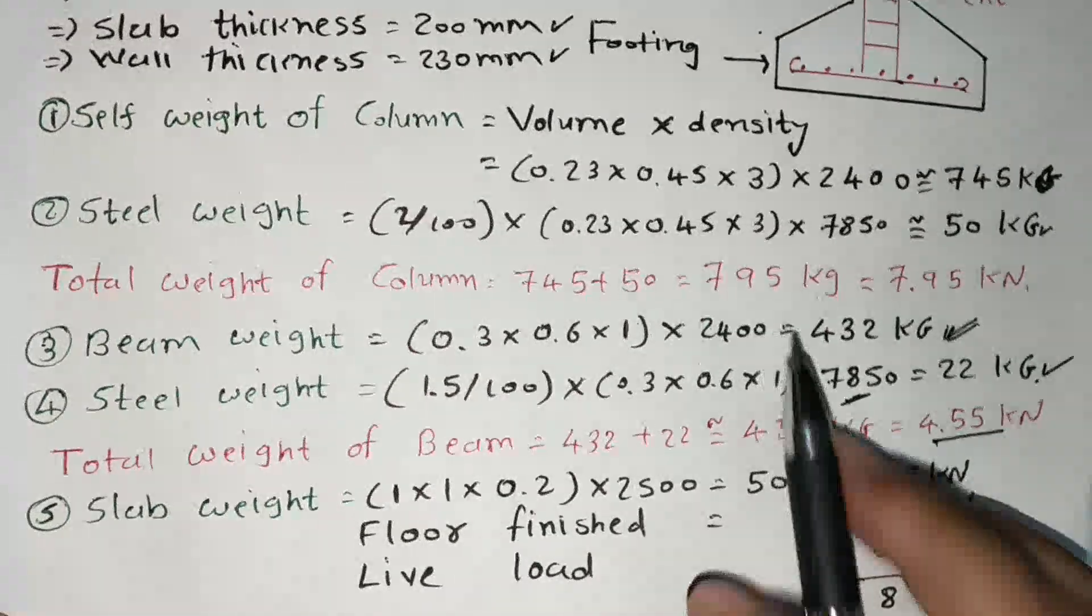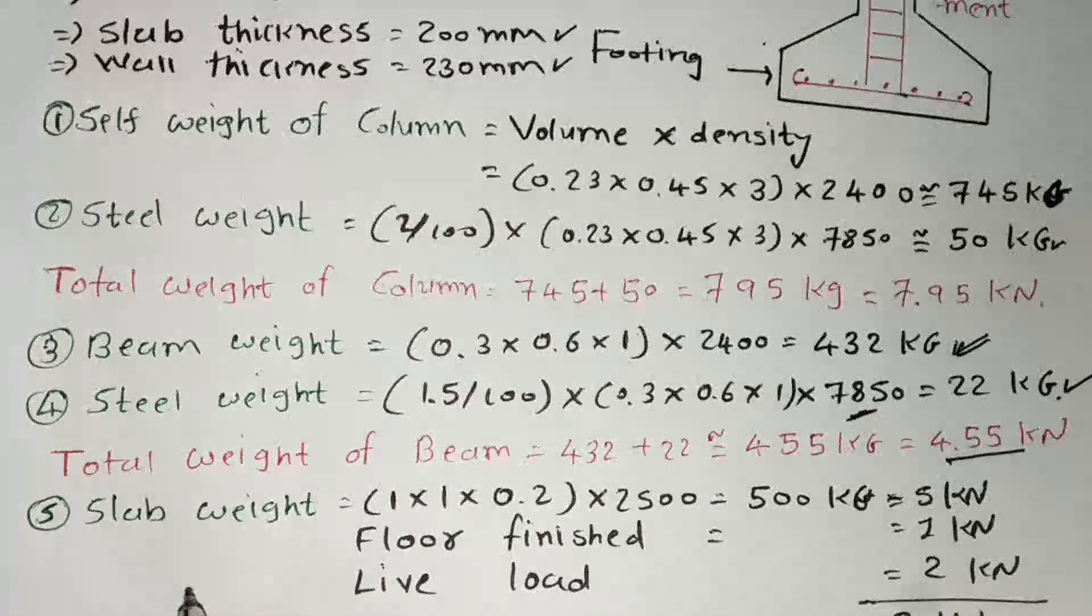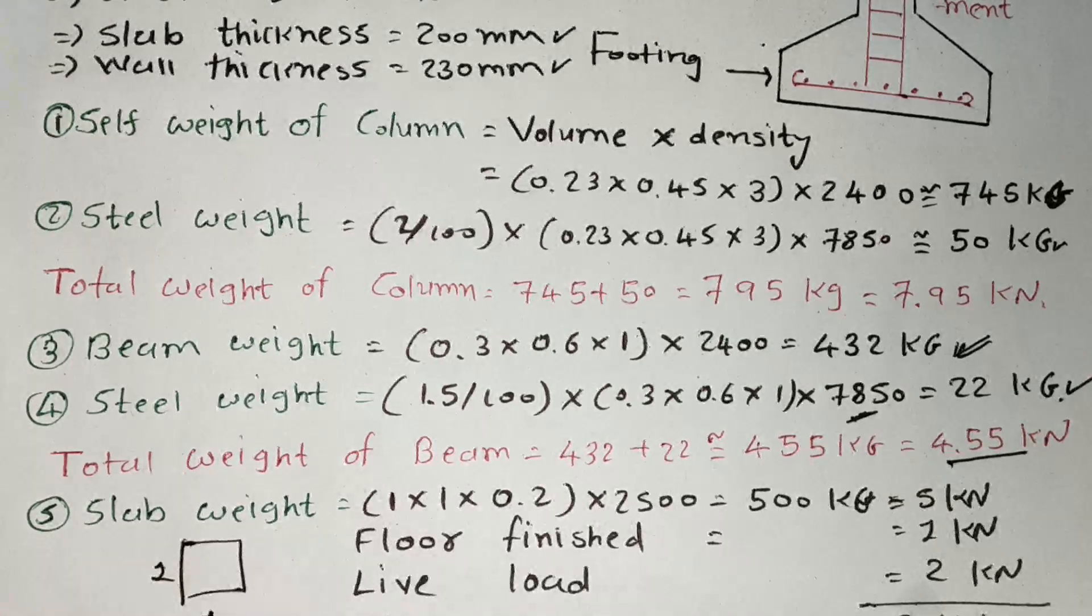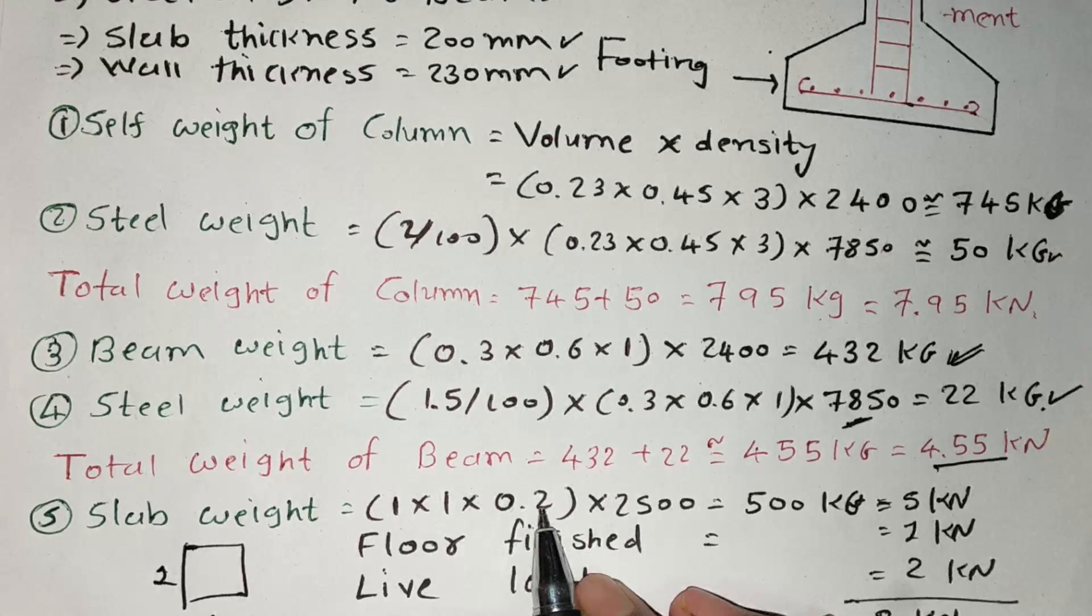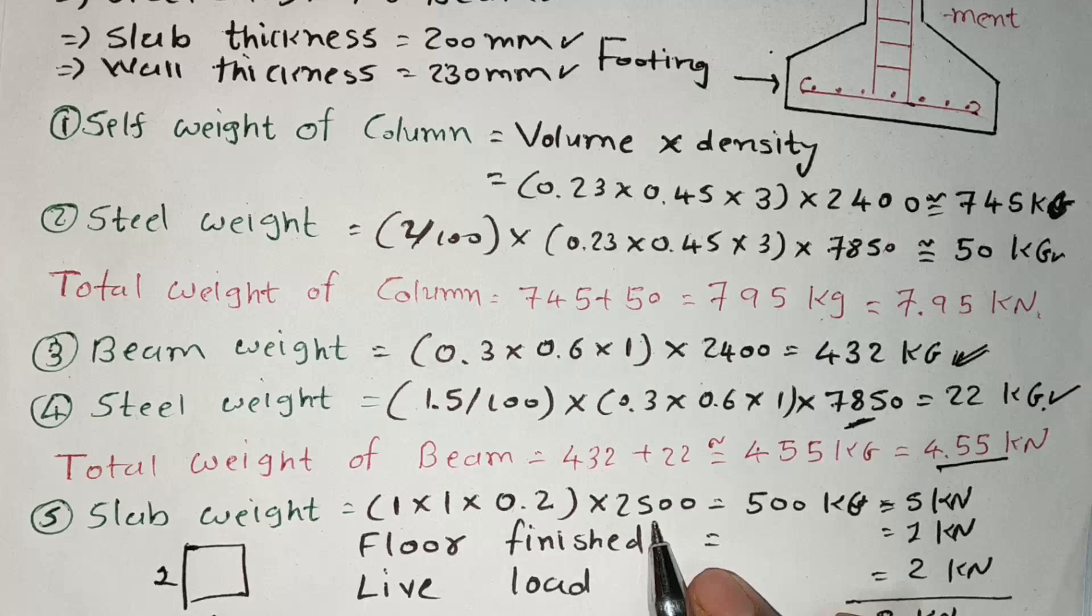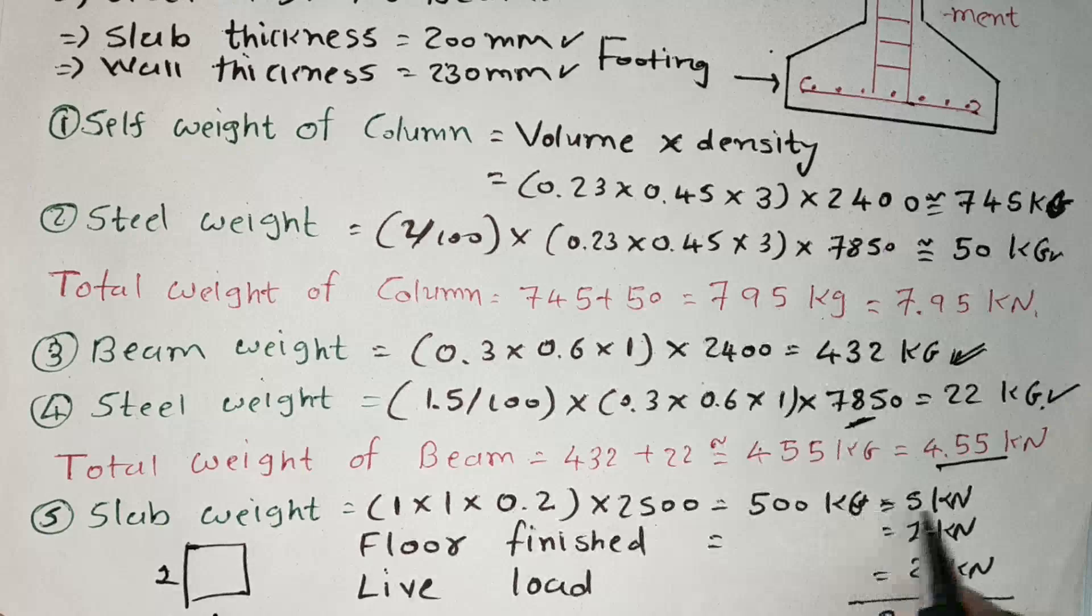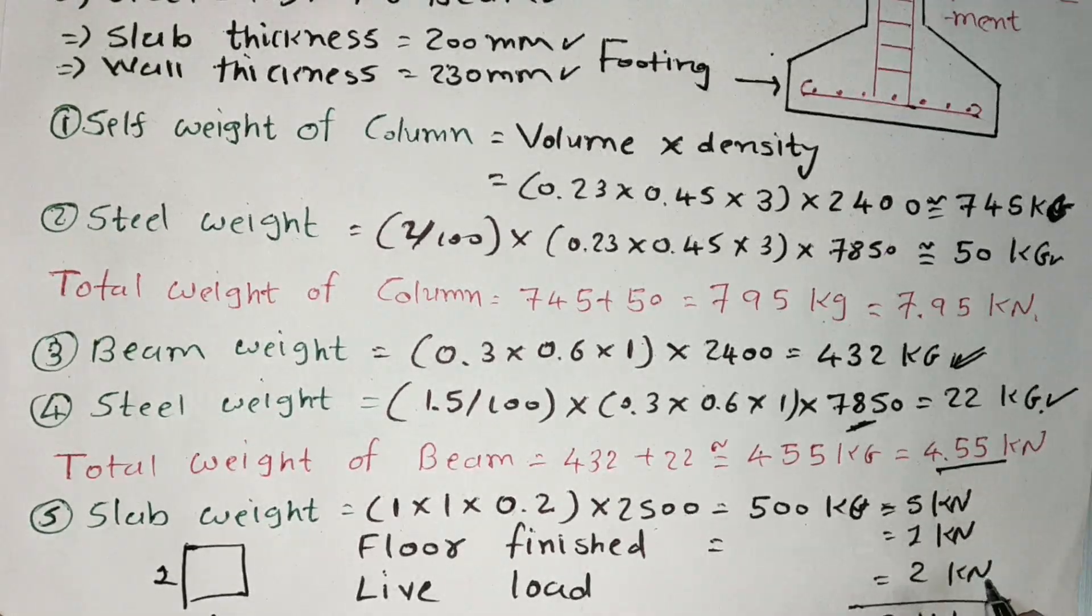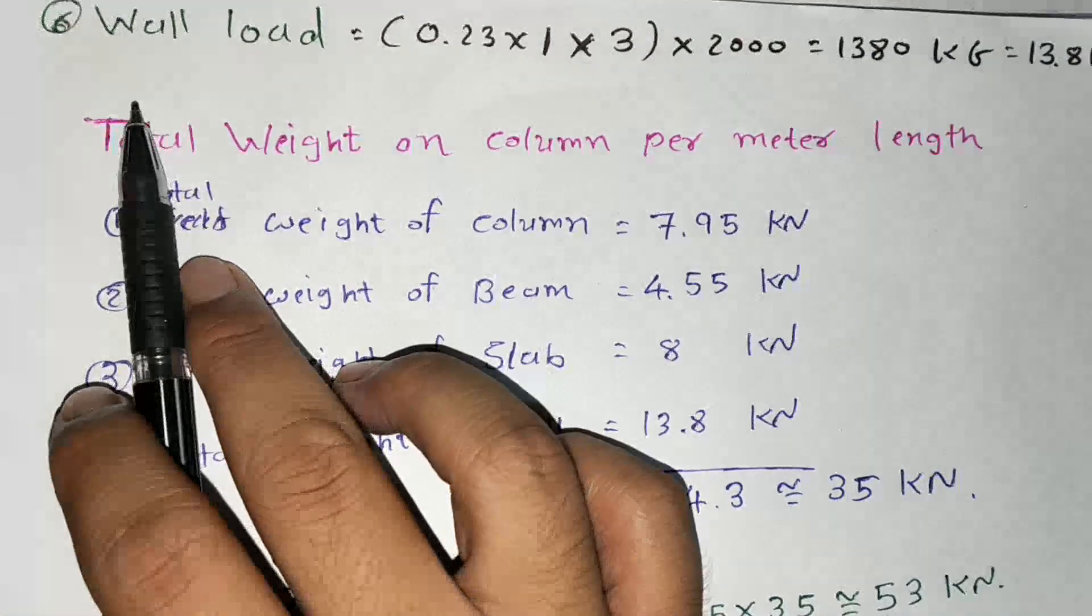Then slab weight, slab weight including I assume 1 meter x 1 meter unit width and depth. And 0.2 is slab thickness. Multiply 2500 is density of reinforced RCC. So here I got 500 kg, almost 5 kN. Floor finish is assumed 1 and live load assumed 2 kN. So I got 8 kN total. So the last step is wall load.